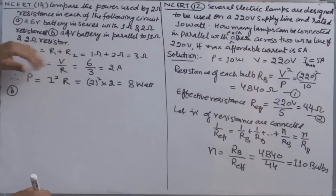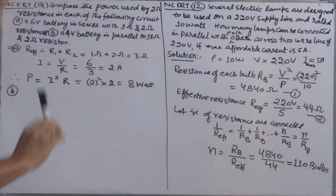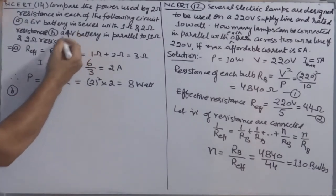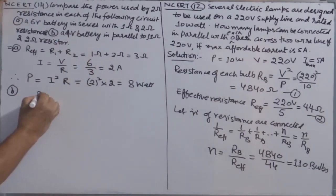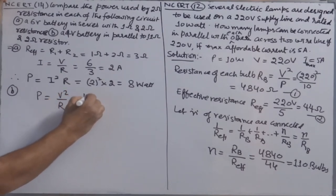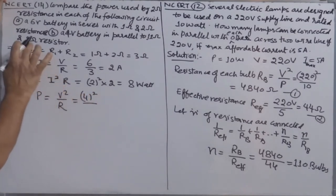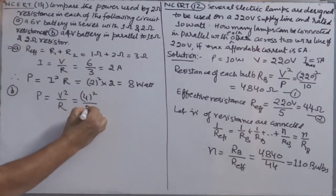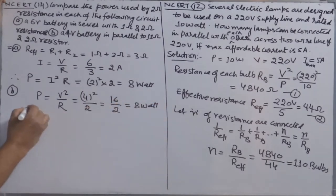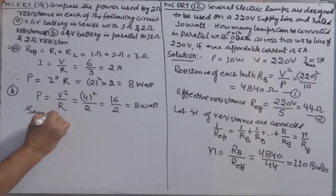Second part: the two resistances are in parallel combination. There is no need to calculate effective resistance or current, because in parallel combination the potential remains the same. You can calculate power directly using formula P = V² / R = 4² / 2 = 16 / 2 = 8 watt. The power is the same in both cases.